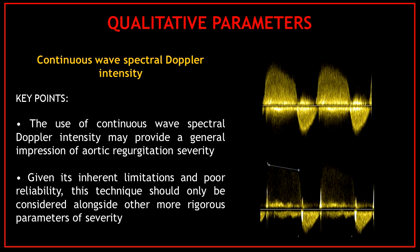What are the key points of this method? The use of continuous wave spectral Doppler intensity may provide a general impression of aortic regurgitation severity. Given its inherent limitations and poor reliability, this technique should only be considered alongside other methods of aortic regurgitation severity assessment.